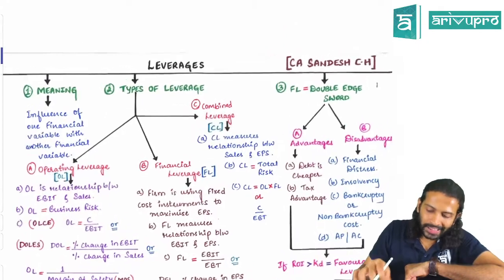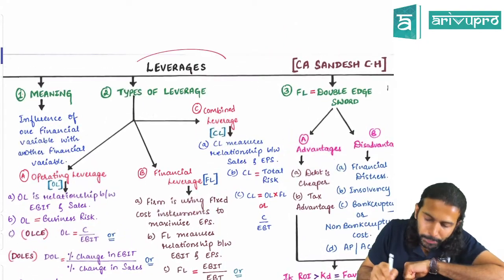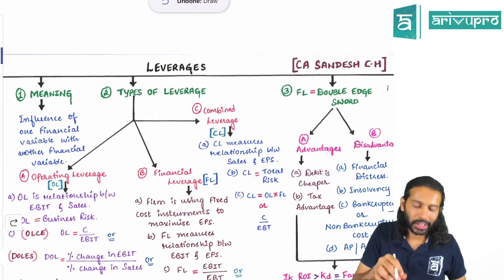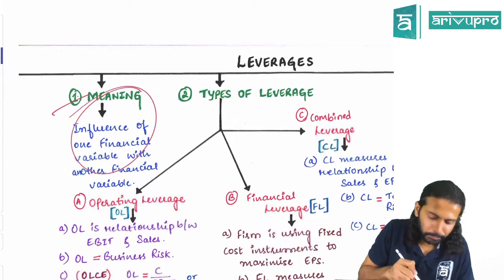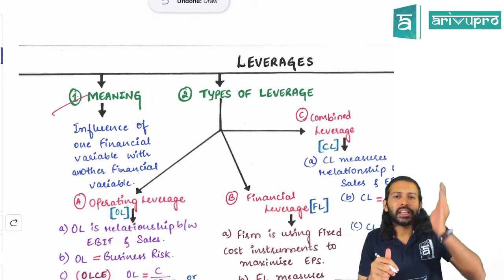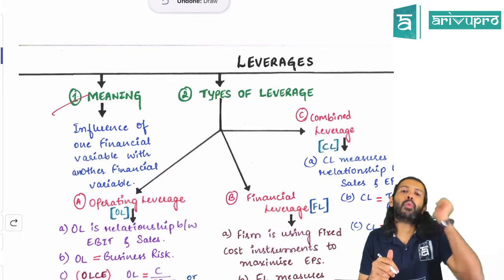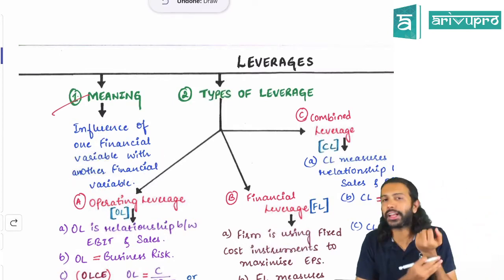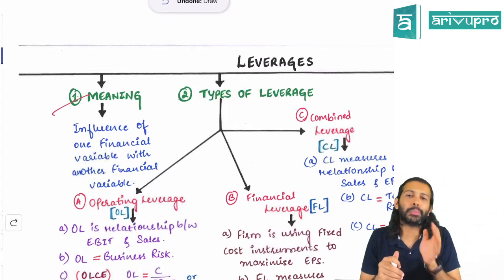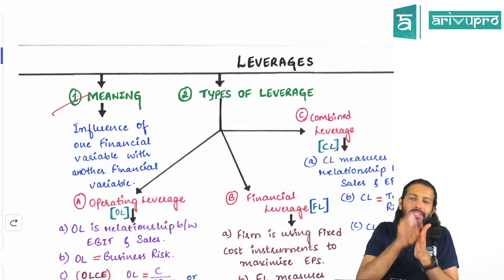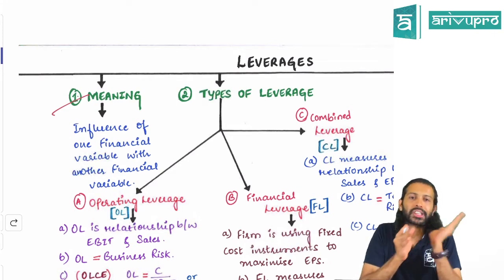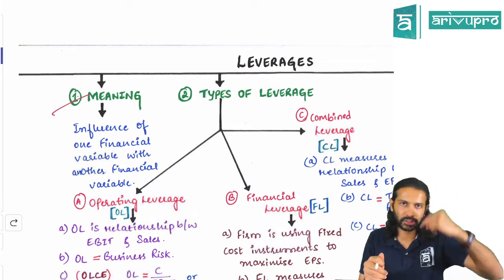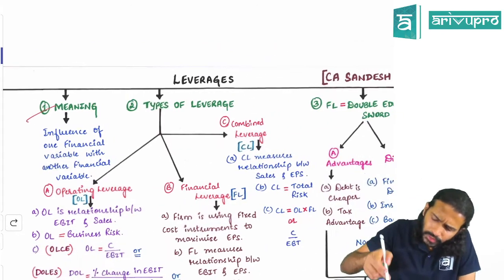Let's quickly revise chapter number six — Leverages — with the help of our summary chart. First, the meaning: leverage means the influence of one financial variable over another financial variable. We are trying to measure what influence a fixed cost has on earnings. That's what we mean by leverage analysis — it is also a risk analysis.